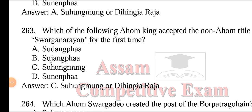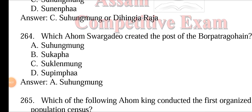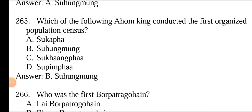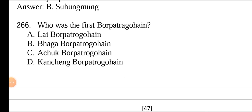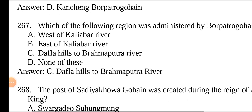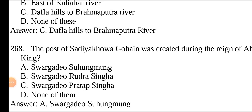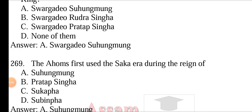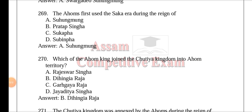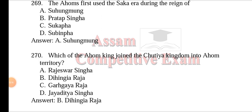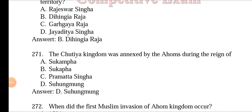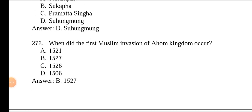Suhum Mong created the post of Barpatra Gohain and conducted the first organized population census. The first Barpatra Gohain was Kacheng Barpatra Gohain. The Barpatra Gohain administered the Dhafla Hills to Brahmaputra rivers region. The post of Saudiya Khua Gohain was also created during the reign of Suhum Mong. The Ahoms first used the Sakha era during Suhum Mong's reign. Suhum Mong also annexed the Sutia kingdom into Ahom territory. The first Muslim invasion of the Ahom kingdom occurred in 1527, during the reign of Suhum Mong.